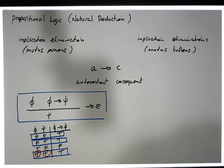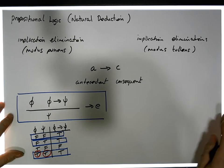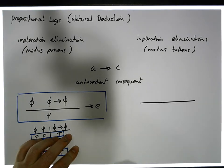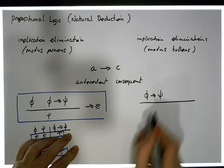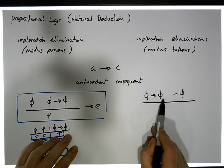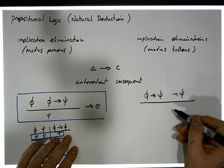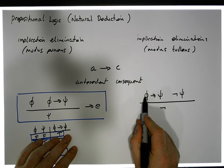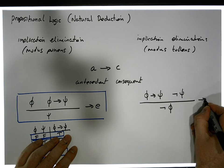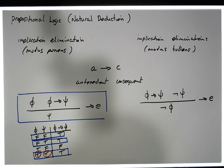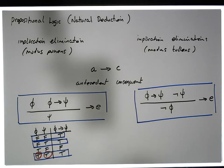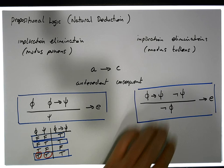Now let's look at the other situation: modus tollens. This is a little bit different. It says: if we know φ implies ψ is true, and if we also know that the negation of ψ is true — in other words, the negation of the consequent — well then we can infer that the negation of the antecedent, the negation of φ, must also be true. This is also implication elimination but in its modus tollens form.